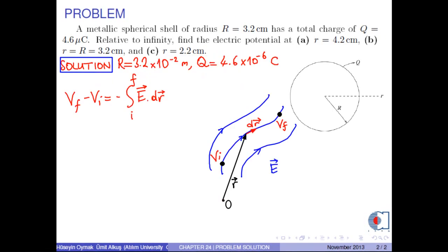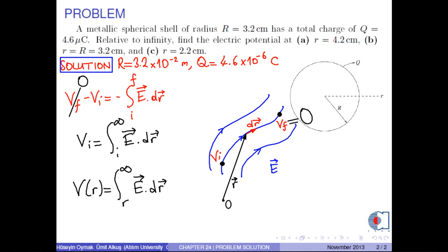In order to solve the problem, we use the formula for the potential difference: v final minus v initial equals negative line integral from initial to final of the electric field E dot the infinitesimal path vector dr. If we choose the final point as infinity, the potential at infinity becomes 0. Therefore, v initial equals the line integral of E dot dr from initial to infinity. According to our problem, we write the potential at r as v(r) equals the line integral of E dot dr from r to infinity.